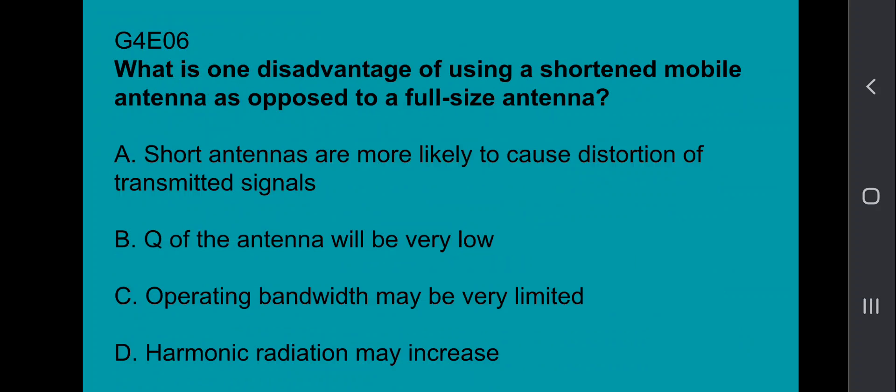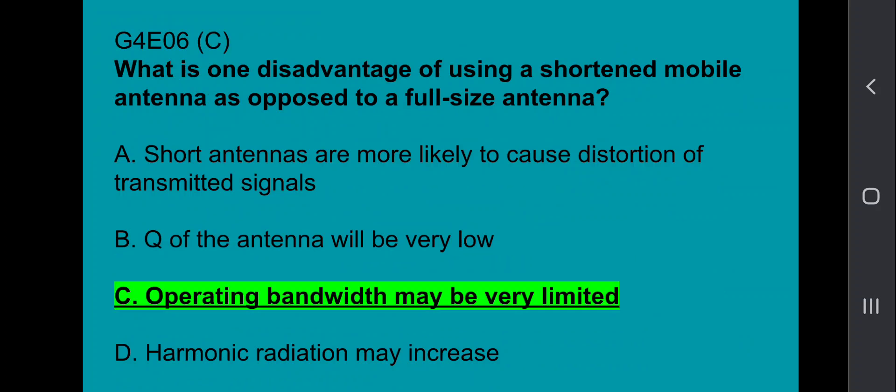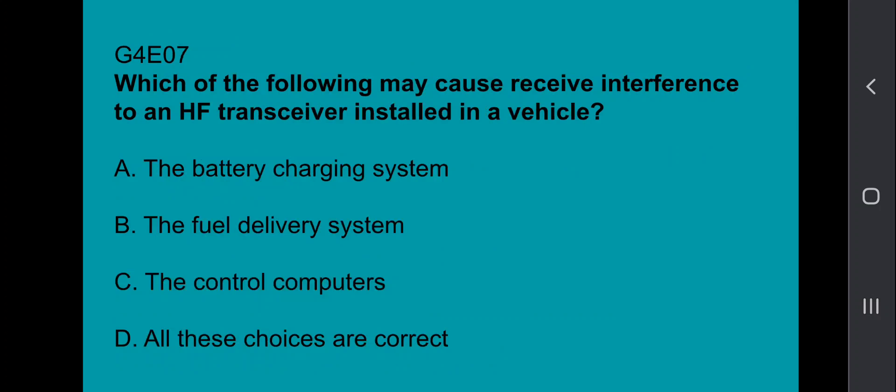G4E06, what is one disadvantage of using a shortened mobile antenna as opposed to a full-sized antenna? Operating bandwidth may be very limited. G4E07, which of the following may cause receive interference to an HF transceiver installed in a vehicle? And that's all of the above, so to clarify that, it's the battery charging system, the fuel delivery system, and the control computers can all cause problems with your HF transceiver.